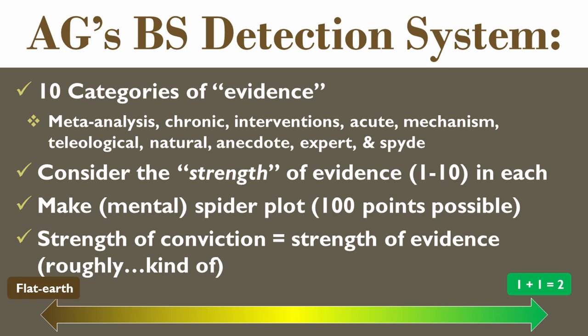All you're doing with BS detection is trying to figure out where whatever topic you're interested in lies — all the way green, all the way brown, or somewhere in the middle. Here's how I figure out where something lands. I kind of view it as 10 different categories of evidence. I don't literally physically do this — I'm just constantly filtering information and adjusting where things land on the spectrum when new information comes in.